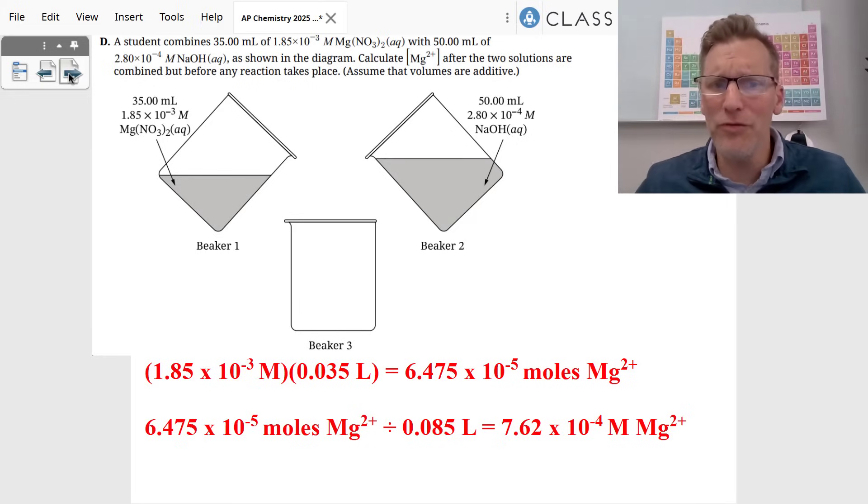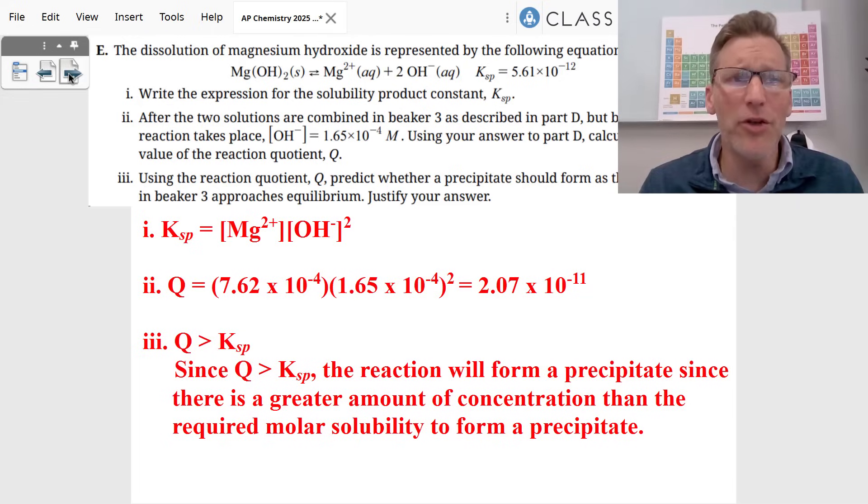Part D, we finally combine these two solutions together, and they want us to calculate the magnesium plus two concentration after the two solutions are combined. But before the reaction takes place, you could have used M1V1 equals M2V2. I did it by taking the molarity of magnesium plus two times the volume of 0.035 liters, 35 milliliters, to find the moles. Then I divide it by the total volume to get 7.62 times 10 to negative four molar of magnesium plus two. You're going to need that number later on, so watch out.